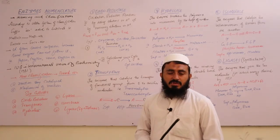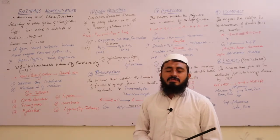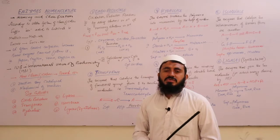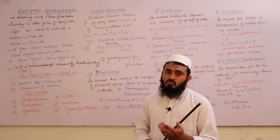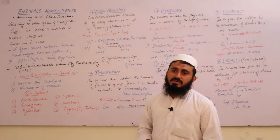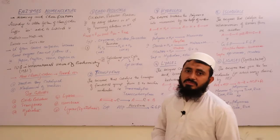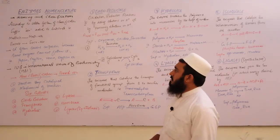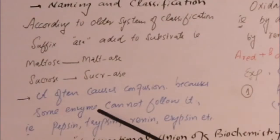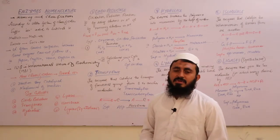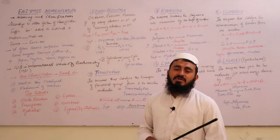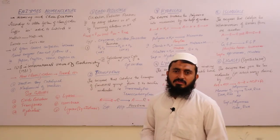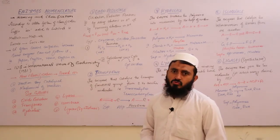Several enzymes were classified based on their substrates this way, but a problem arose: some enzymes did not fit this formula. For example, pepsin, trypsin, renin, erepsin — from these names, it is not clear what their substrate could be.